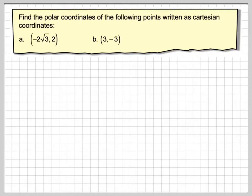In this video, we're going to look at Cartesian coordinates and change them into polar coordinates. Find the polar coordinates of the following points written as Cartesian coordinates: (-2√3, 2) and (3, -3).